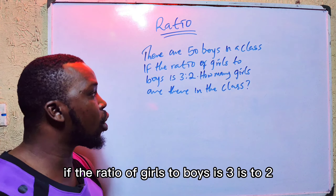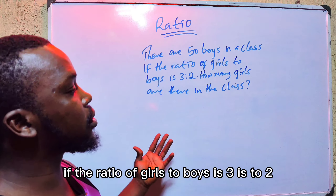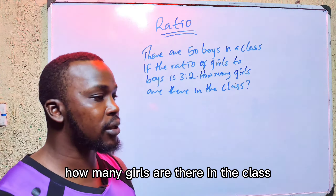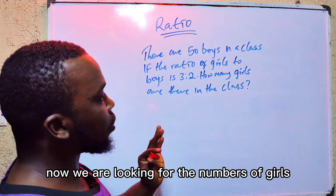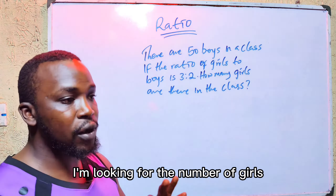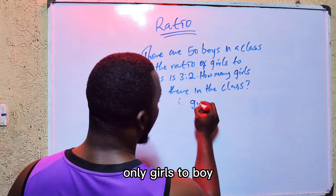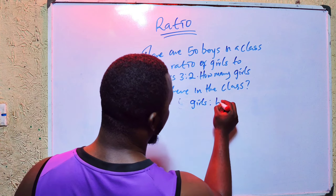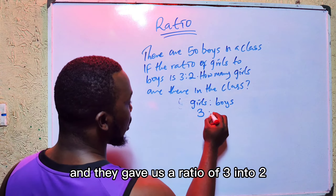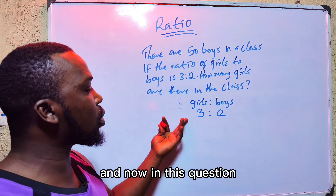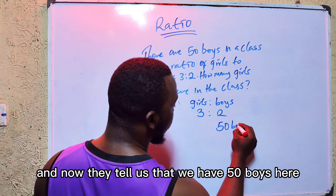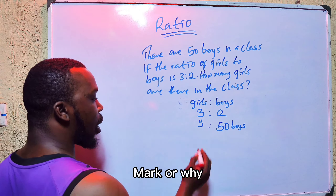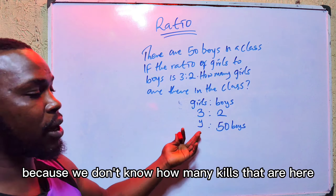The total biscuits we are sharing is 185. To find Andrew's share: it becomes 2 over 5 times 185 over 1. Five divides into 185 to give 37, then 2 times 37 gives us 74. Andrew got 74 biscuits.